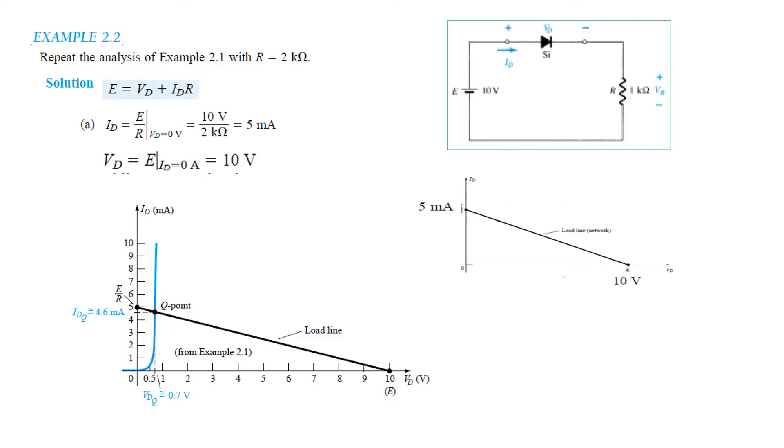So first part we have got and second part again in the same way Vr is IR into R or Id into R. Plugging in the values it is 9.2, or the other way Vr is E minus Vd. So 10 minus 0.7 is 9.3. So there again close and some differences because of the reading error of the graph.